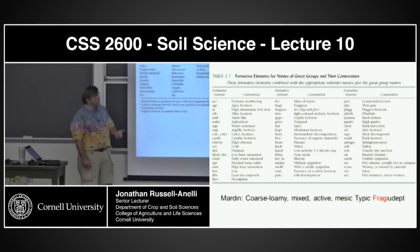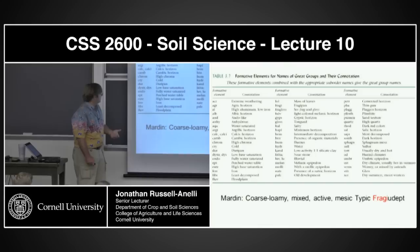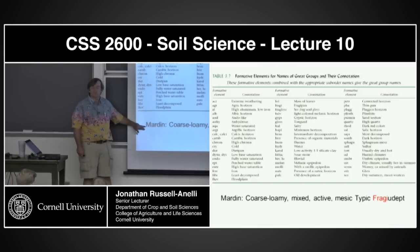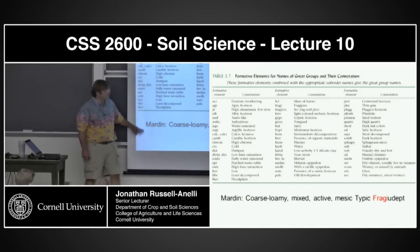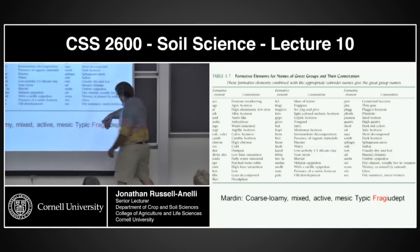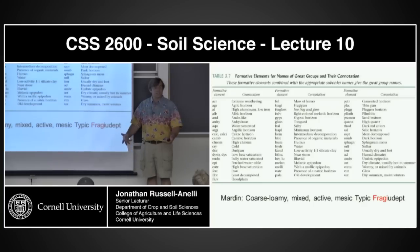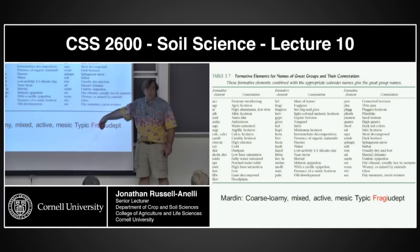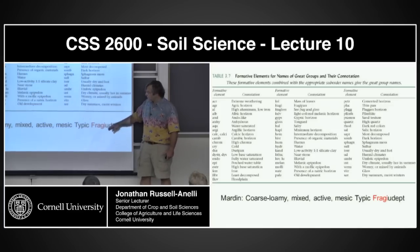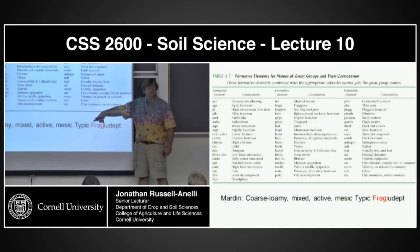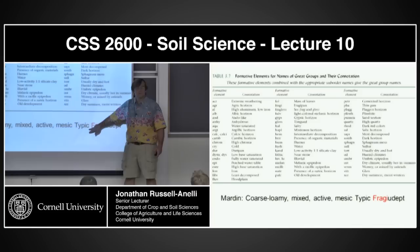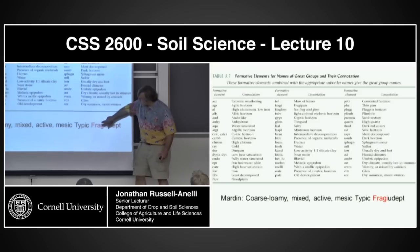Here's the Mardin soil that you met this week. We start with 'ept' — the formative element for Inceptisol — showing horizonation. Udic means moist. It's a moist Inceptisol. It's got a 'fragi' — a fragipan. And it's a typical one. This would be order, suborder, great group, subgroup. The next group we go down to is called family.